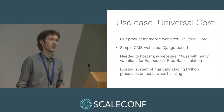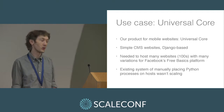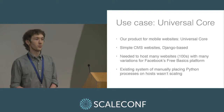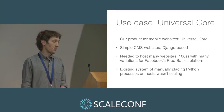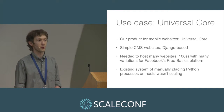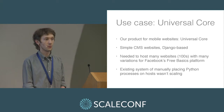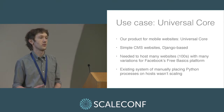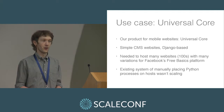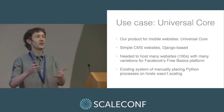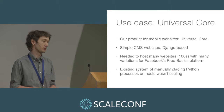Our first driving use case for this platform is our product called Universal Core — it's a product for mobile websites, mostly quite simple CMS websites. We're a Python shop, so it's all Django-based stuff. And we kind of needed to scale this platform a lot. We partner with a lot of different organizations, one of them is Facebook for their free basics platform, and we needed to bring a lot of sites to a lot of different countries. Our existing system of manually arranging processes onto different machines in our Puppet provisioning was not really scaling.